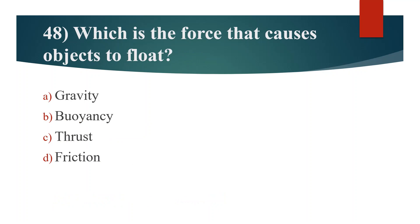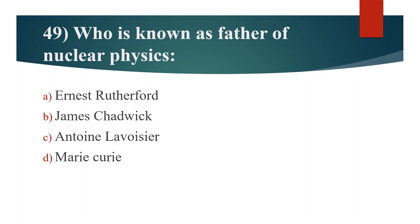Forty-eighth question. Which is the force that causes objects to float? Option A: Gravity. Option B: Buoyancy. Option C: Thrust. Option D: Friction. Answer is Option B: Buoyancy.